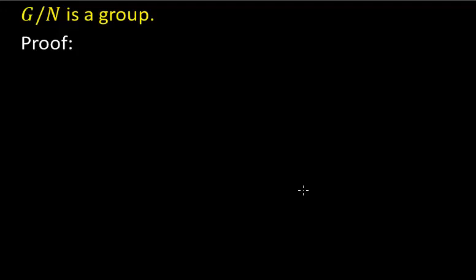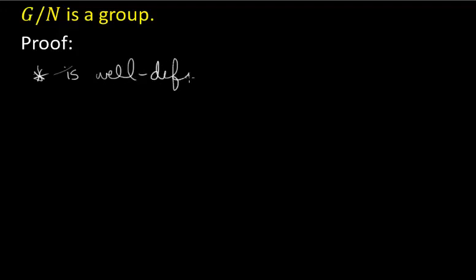The most important part of this proof is proving that the operation is well defined. We want to prove that the operation is well defined — we haven't had to do this before. Our coset AN might be written as A'N. We know it doesn't make any difference who stands outside to name the coset.